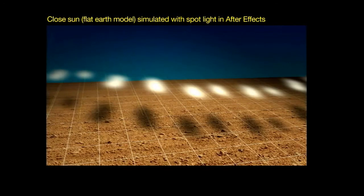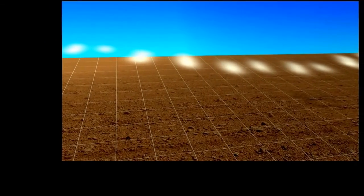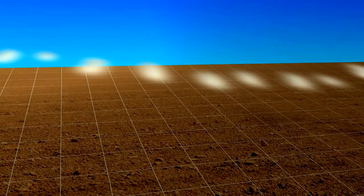Let's see what happens when I switch the light to one that's more like the sun as it's been explained to us. After Effects has the option to make a parallel light source. The sun is supposedly 96 million miles away, 155 million kilometers, so it's pretty much parallel.